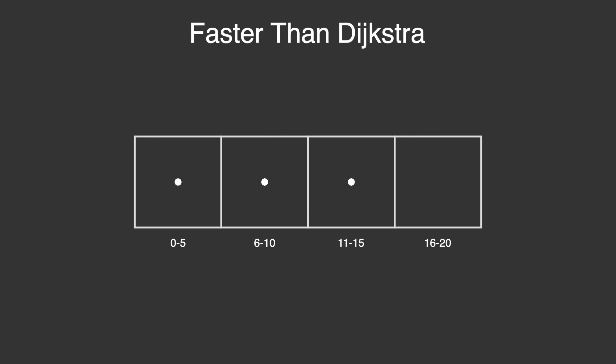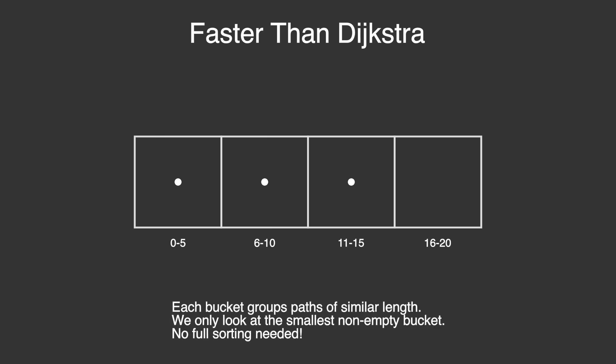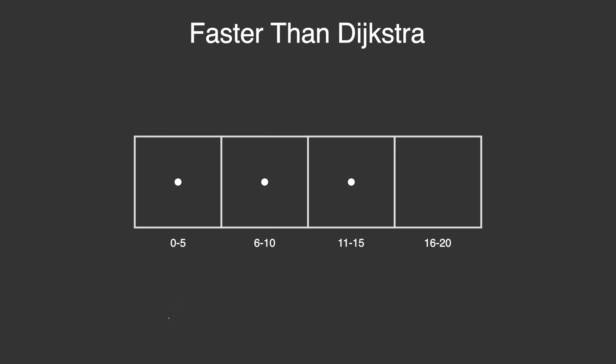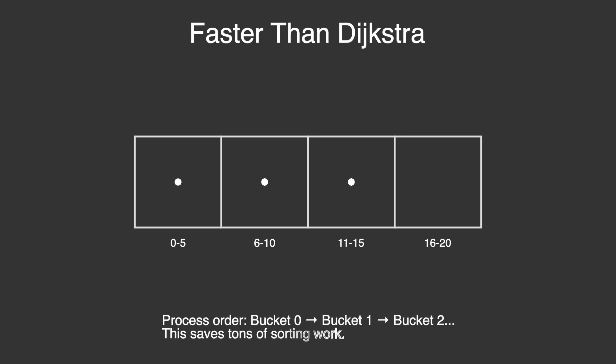This avoids sorting everything from scratch and saves an enormous amount of work. While Dijkstra runs in O of M plus N log N time, the new algorithm speeds things up to O of M times log to the power two-thirds of N. That's a big improvement.